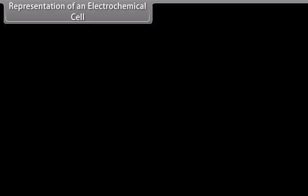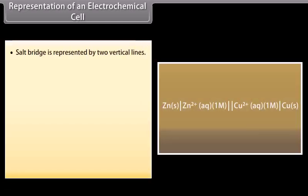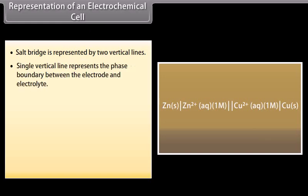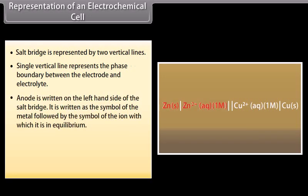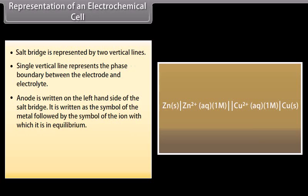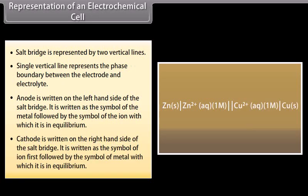Representation of an electrochemical cell: A galvanic cell is represented as follows. The salt bridge is represented by two vertical lines; a single vertical line represents the phase boundary between the electrode and electrolyte. The anode is written on the left-hand side of the salt bridge, as the symbol of the metal followed by the symbol of the ion with which it is in equilibrium. The cathode is written on the right-hand side, as the symbol of the ion first, followed by the symbol of the metal with which it is in equilibrium.